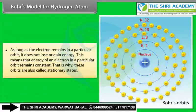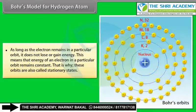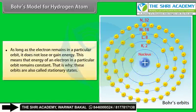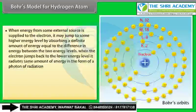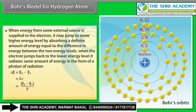As long as an electron remains in a particular orbit, it does not lose or gain energy — these are called stationary states. When energy from an external source is supplied, the electron jumps to a higher energy level by absorbing a definite amount of energy equal to the difference between the two energy levels. When it jumps back, it radiates the same energy as a photon: ΔE = E₂ − E₁ = hν, therefore ν = (E₂ − E₁)/h.